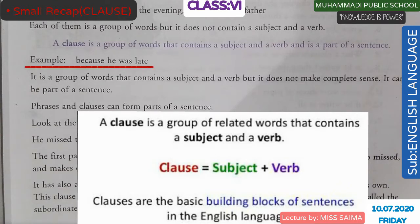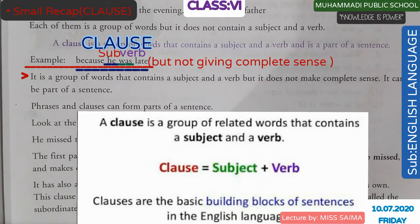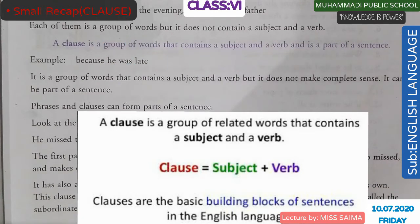For example, 'because he was late.' It is a group of words that contains a subject and a verb but it does not make complete sense. It can be a part of a sentence — it does not make complete sense and it is a part of a sentence.